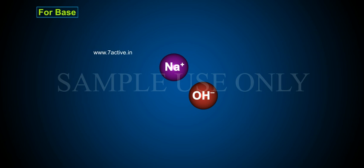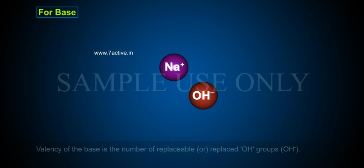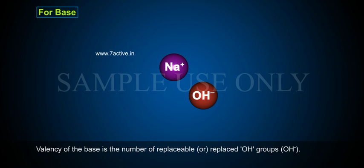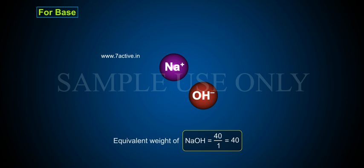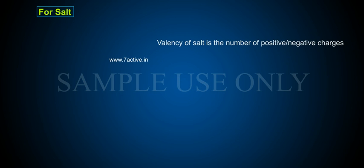For Base, valency of the base is the number of replaceable or replaced OH groups. The Equivalent Weight of NaOH (sodium hydroxide) is equal to 40 by 1, which equals 40.